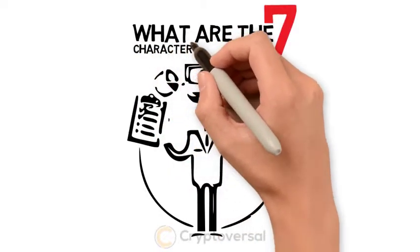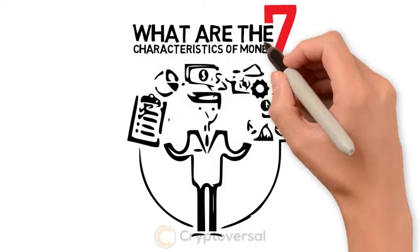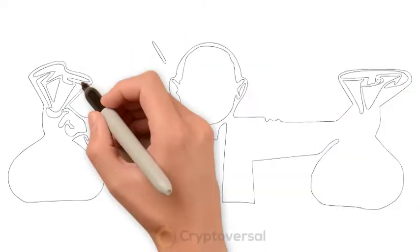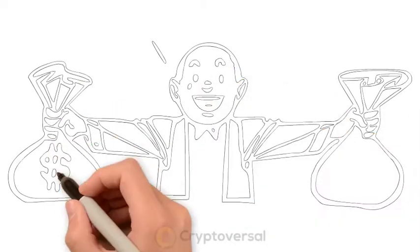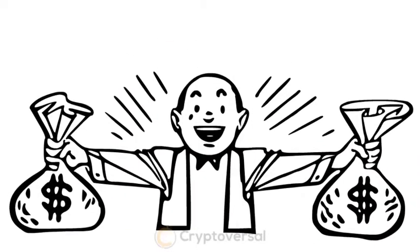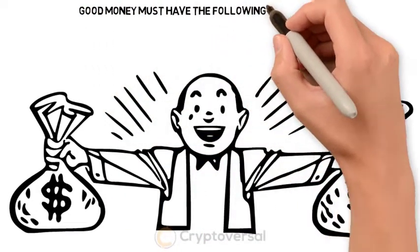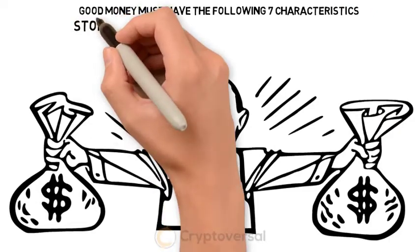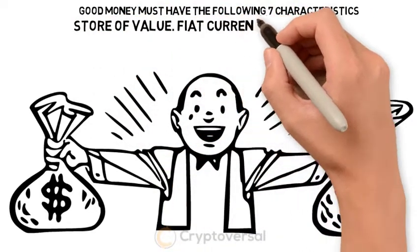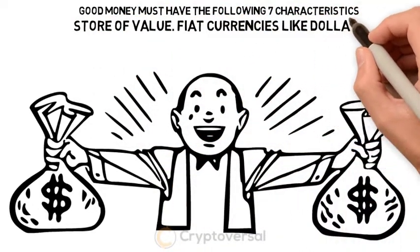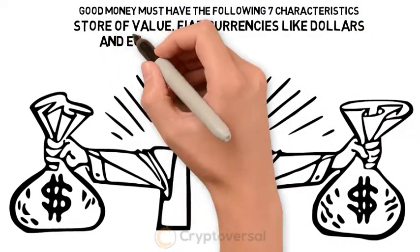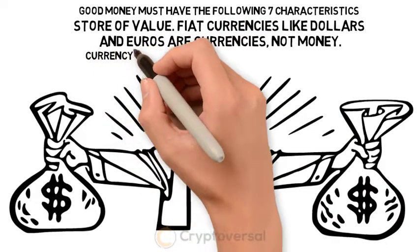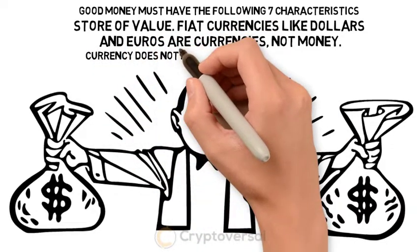What are the seven characteristics of money? Good money must have the following seven characteristics, including store of value. Fiat currencies like dollars and euros are currencies, not money — currency does not have one of the seven characteristics.